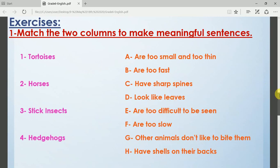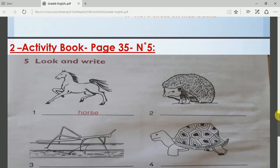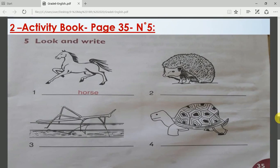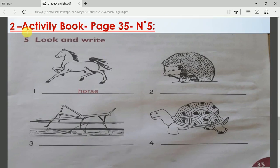Also, without looking at the book or at the previous exercise, I want you to open your activity book page 35 and look at number five. I want you to write the name of each animal.